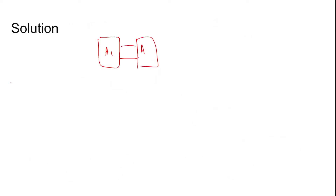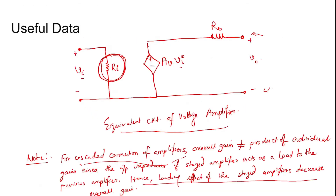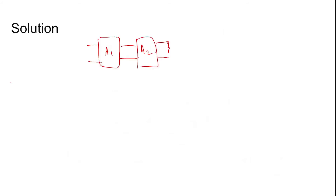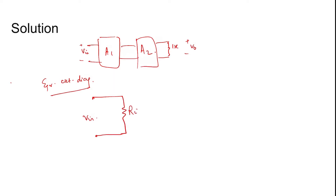Coming to the solution: two amplifiers A1 and A2 are cascaded, and the load RL = 1 kΩ is given. Vin is the input and Vout is the output. Drawing the equivalent circuit: the input impedance Rin is connected with Vin, and the gain is Av01 times Vin.